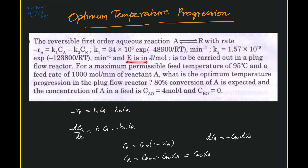The reaction is to be carried out in a plug flow reactor with a maximum permissible feed temperature of 95 degrees Celsius and a feed rate of 1000 moles per minute of reactant A. We need to find the optimum temperature progression. 80% conversion of A is expected, the concentration of A in the feed is 4 moles per liter, and CR0 equals 0 — meaning only A is initially present.